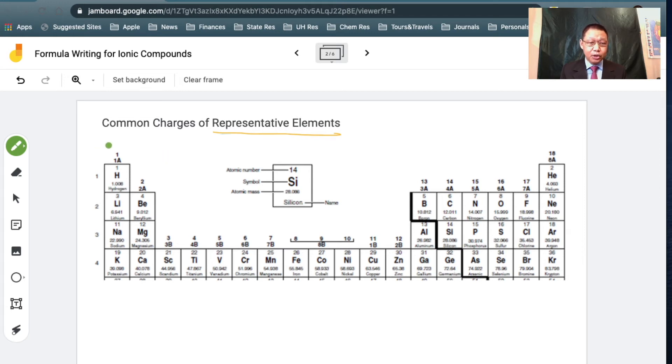A simple rule of thumb is that group 1 elements typically want to form a one plus charge, which means they give away one electron. Group 2 elements typically want to give away two electrons to achieve a plus two charge. Group 3 would typically give away three electrons and have a charge of three plus. Group 4 elements neither want to give away or accept electrons, and so they typically don't form charges.